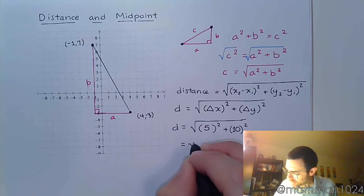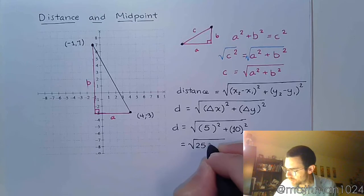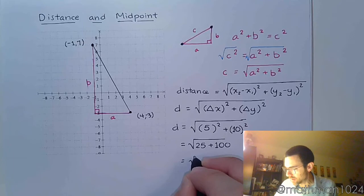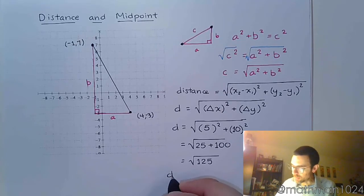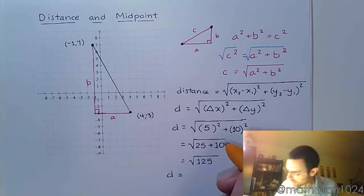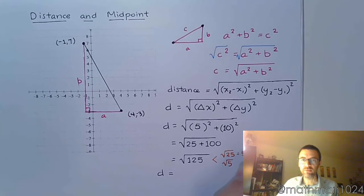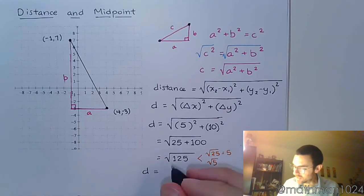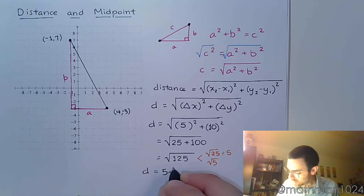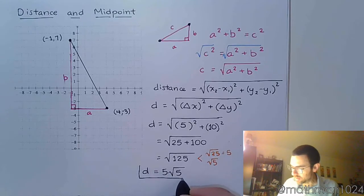So I just have to work this out. So this is the square root of 25 plus 100. The square root of 125, which tells me that my distance, when I break this down, remember, we're just simplifying radicals here, so this breaks down to be the square root of 25 times the square root of 5. So this guy becomes 5, and this guy stays as he is. So we have 5 times the square root of 5. And that's how we find the distance for this guy.